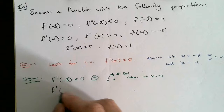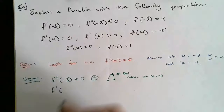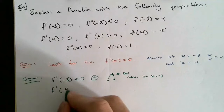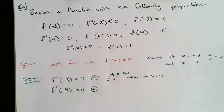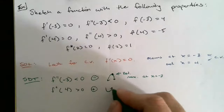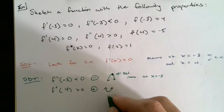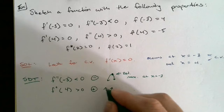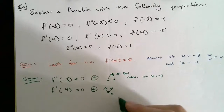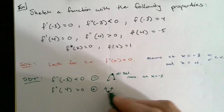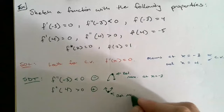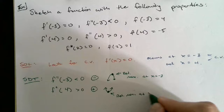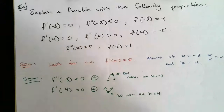We also have f''(4), which they told us is greater than 0 — that's positive. The second derivative being positive tells me my graph there is concave up. If it's concave up, that point is a low point, so we have a relative min at x=4.